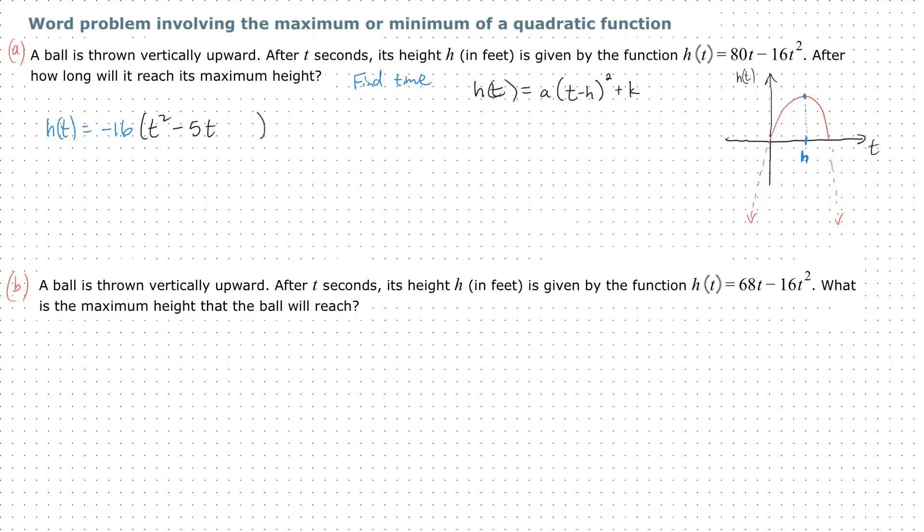Let's go ahead and complete the square. Take that 5, divide by 2, you get 5/2. Now square it.